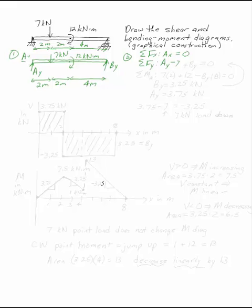Ay minus seven plus By equals zero. And the sum of the moments at, say, A, gives you seven times two plus twelve minus By times eight equals zero.